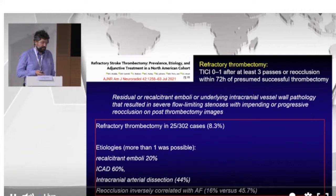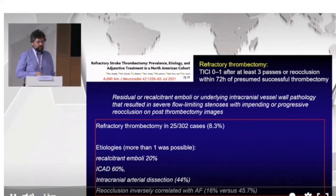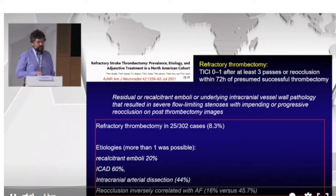Refractory thrombectomy has been defined in one paper as TICI 0/1 after at least three passes, or reocclusion within 72 hours — I think this is quite a correct definition. In this paper they specifically analyzed these patients, and in 25 out of about 300 cases they had early vessel reocclusion.